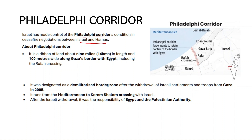The Philadelphia Corridor is a ribbon of land about 14 kilometers in length and 100 meters wide, situated along Gaza's border with Egypt. There is a crossing called the Rafah Crossing between this corridor. It was designated as a demilitarized border zone after the withdrawal of Israeli settlements and troops from Gaza in 2005.